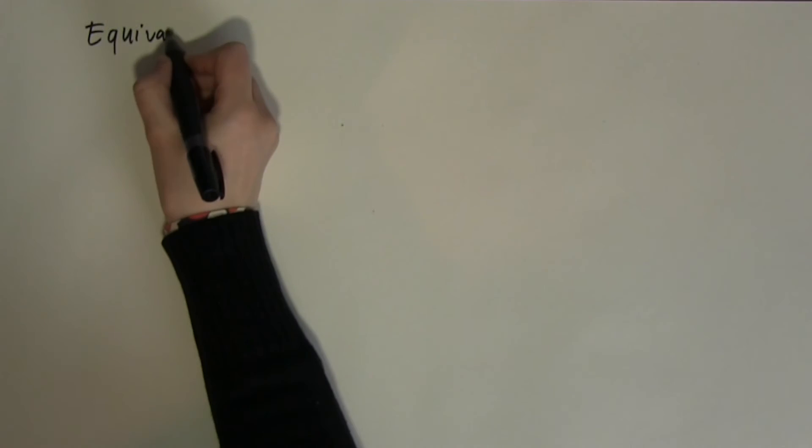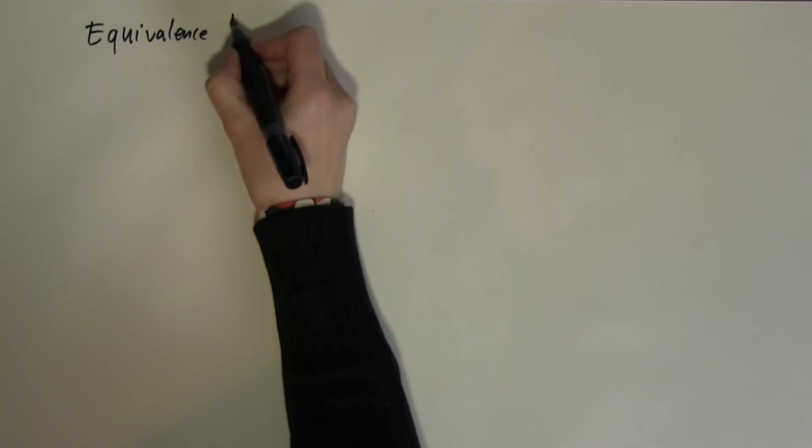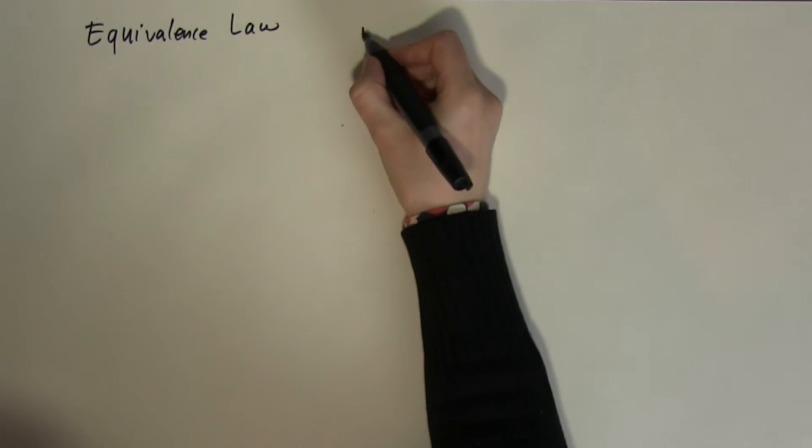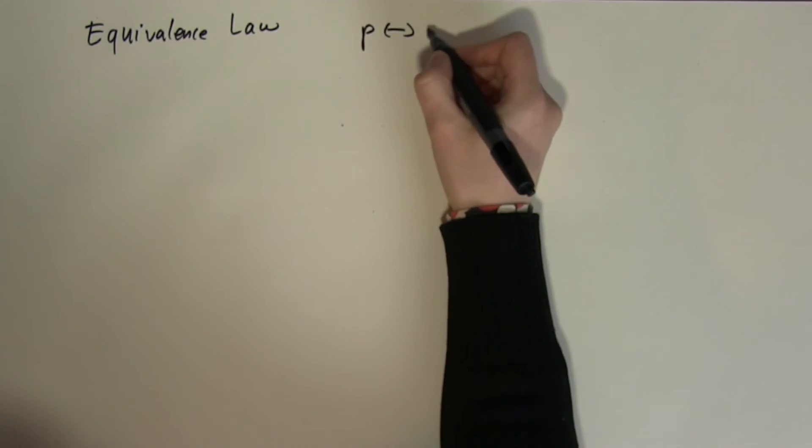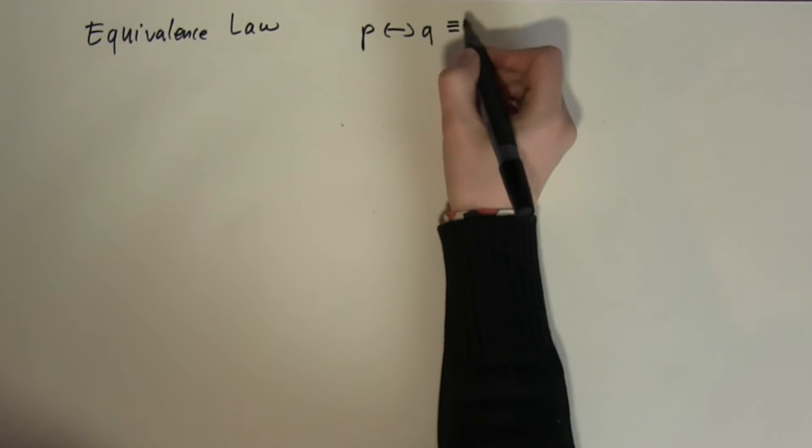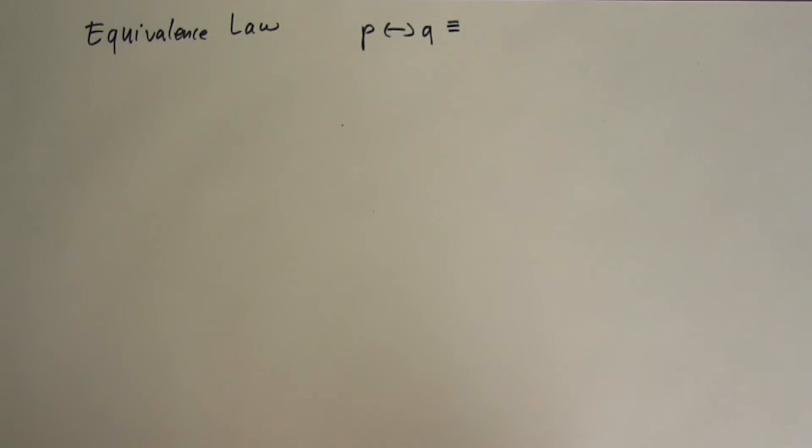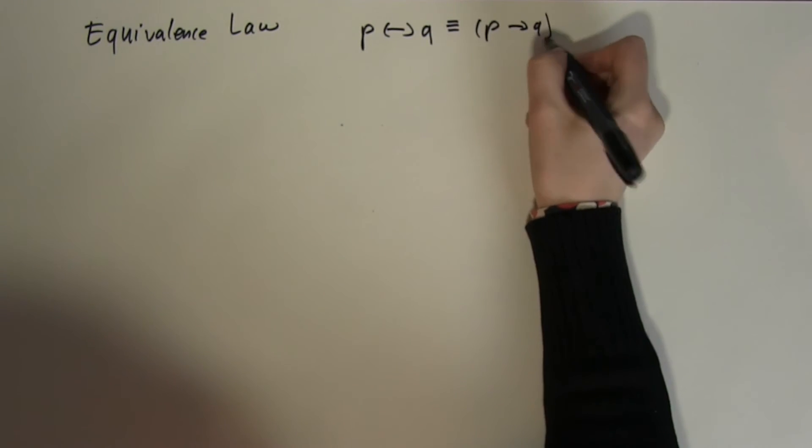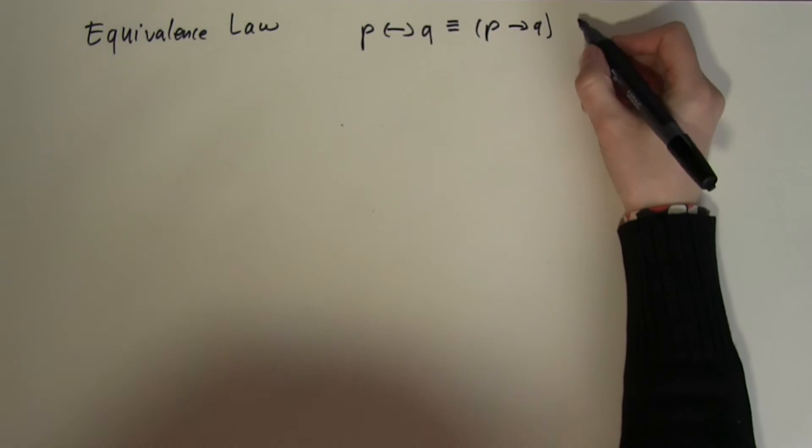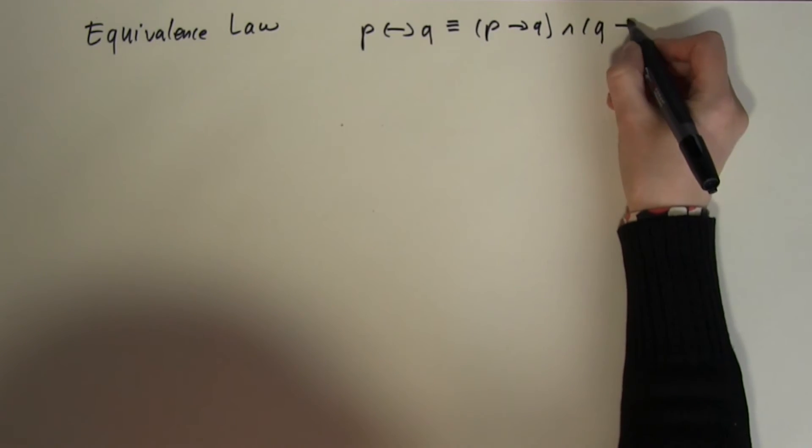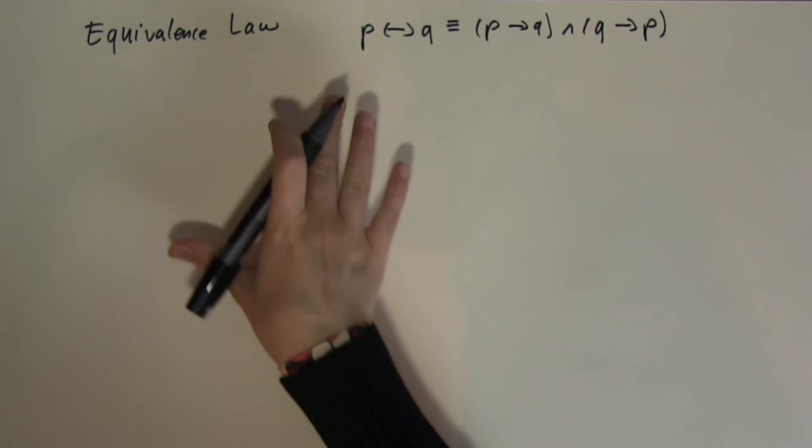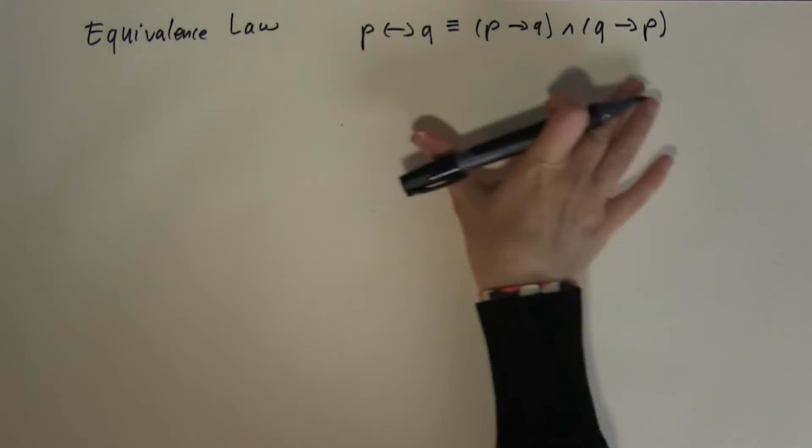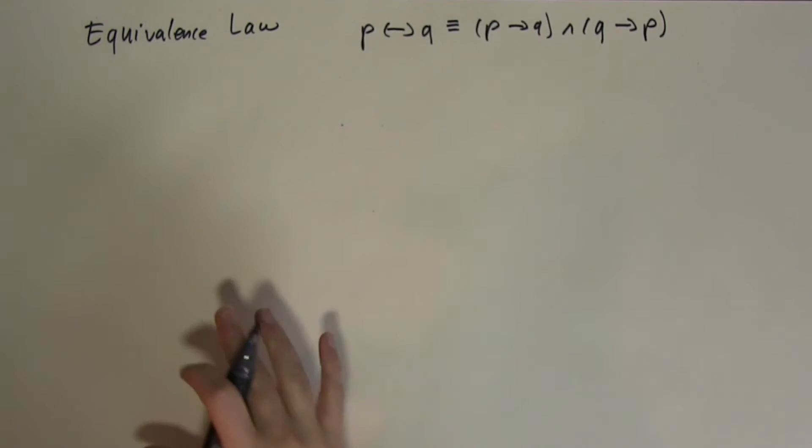The next law that we are going to look at is the equivalence law. The equivalence law states that P if and only if Q is logically equivalent to P if then Q and Q if then P. To convince ourselves that this is true again what we are going to do is go through and compare the truth tables.